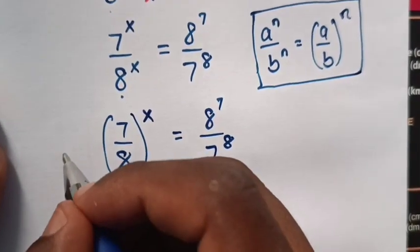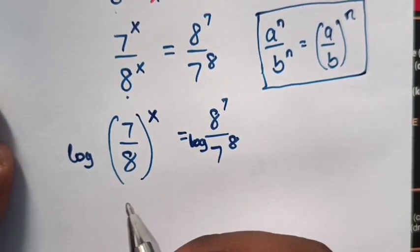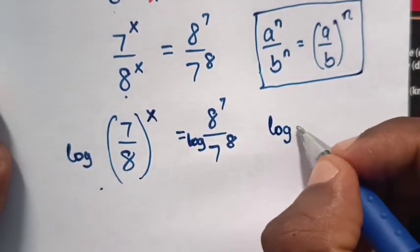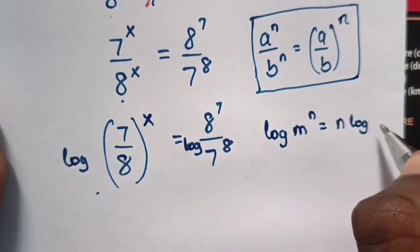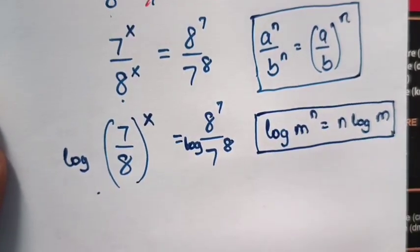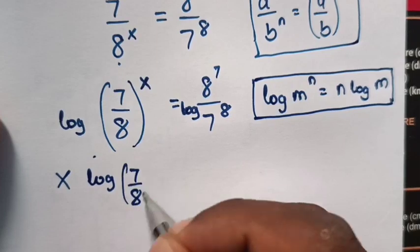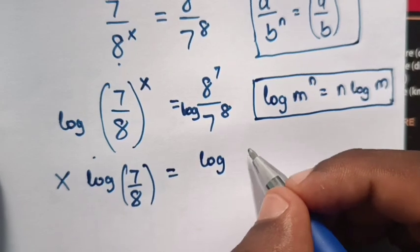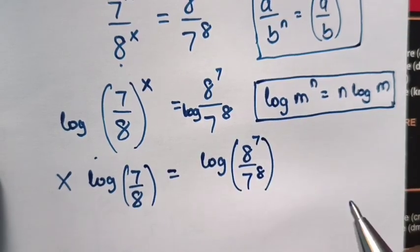Then, from here, we apply log in both sides so as to find the value of x. Now, in our equation, we apply the power logarithmic rule, which is log m power n equals n times log m. So log (7 over 8) power x becomes x log (7 over 8), which equals log (8 power 7 over 7 power 8) bracket.